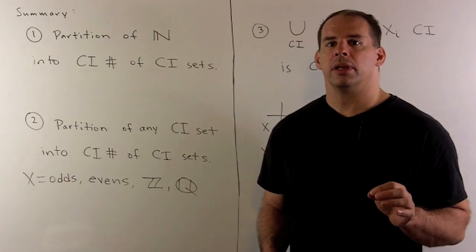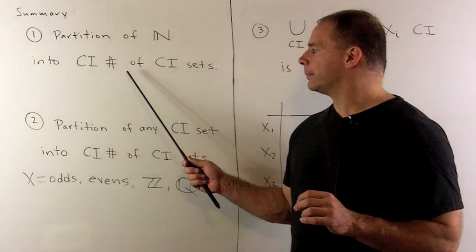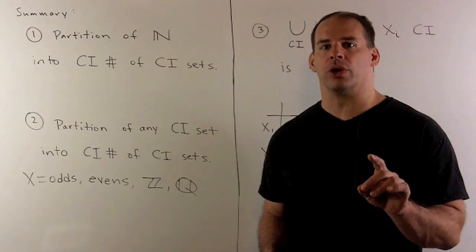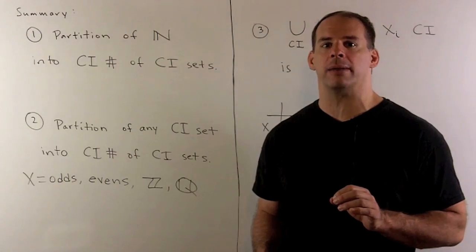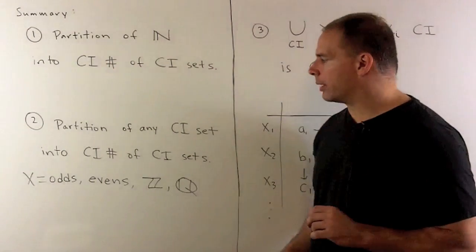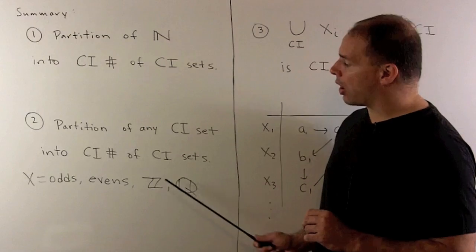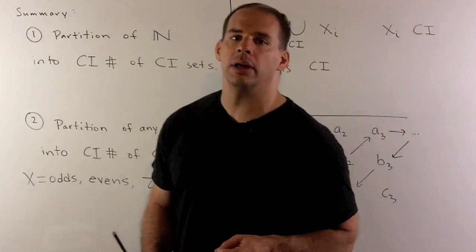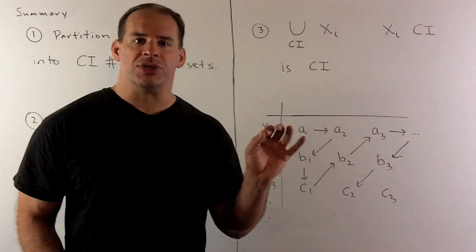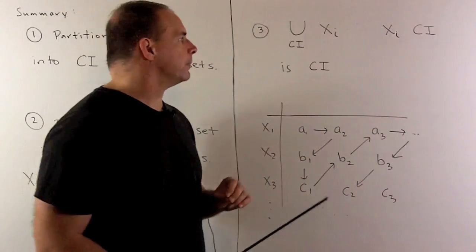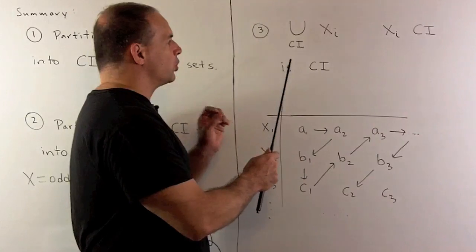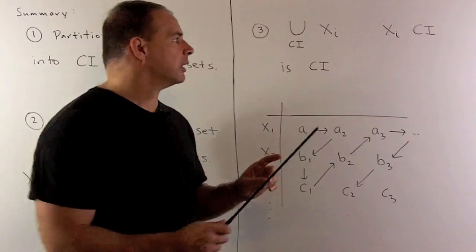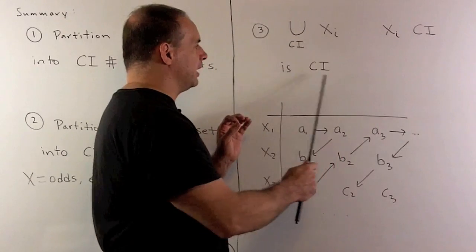To sum up, we have the partition of the natural numbers we're looking for. We could use the same process to replace the natural numbers with any countably infinite set — so it'll work for the odd integers, the even integers, all integers, rational numbers, and so on. Finally, we could use the same process to show that if I have a disjoint union of a countably infinite number of countably infinite sets, the new set is going to be countably infinite as well.